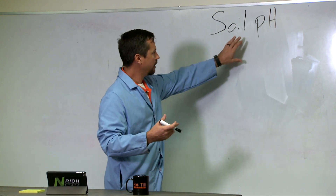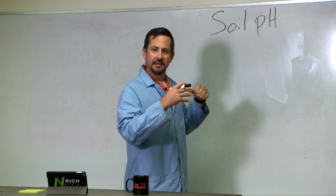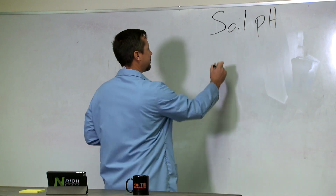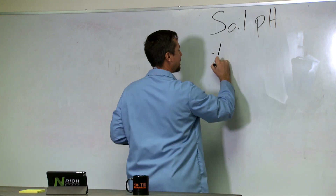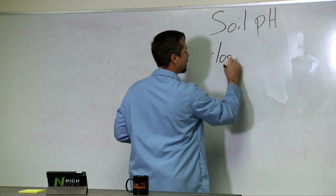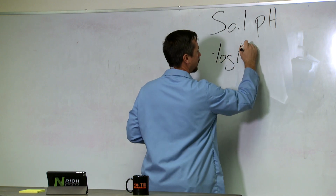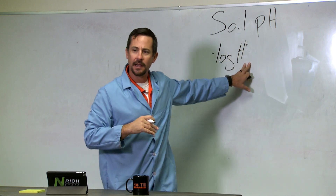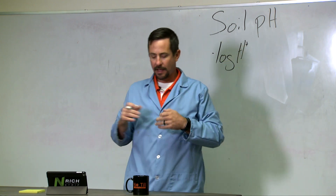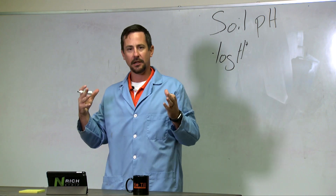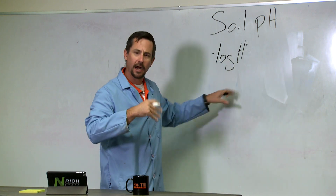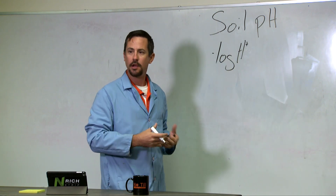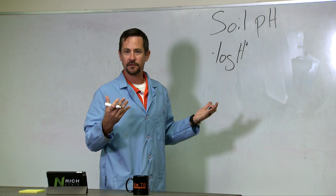The definition of pH is, in scientific terms, the negative log of the hydrogen concentration. All this is saying is that pH is how much hydrogen — H — we have in the soil system.